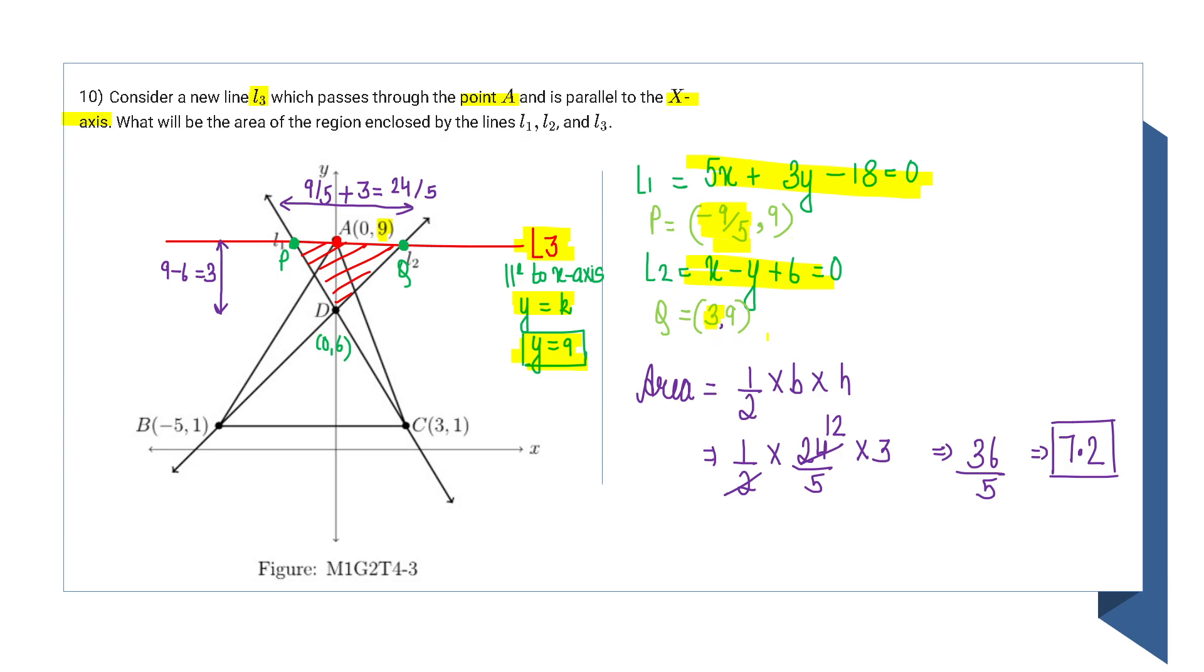Now I need to find the area of triangle PQD. Either you use Heron's formula since you know all three points, or use the simple method: calculate the height and base and put the values into the formula.